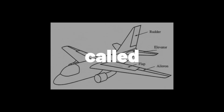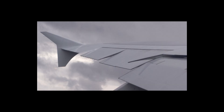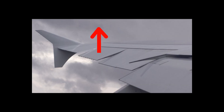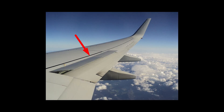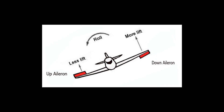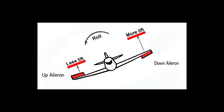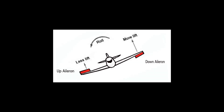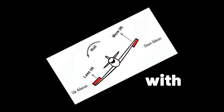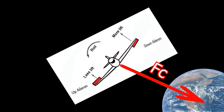But what happens if the pilot wants to turn the plane while flying? The plane has things called ailerons, which can move up and down. When the pilot wants to turn, he simply makes one aileron go up and the other go down. With this, he creates a difference in lift once again, and the plane will roll with the help of centripetal force.